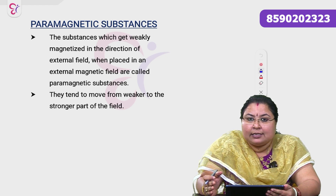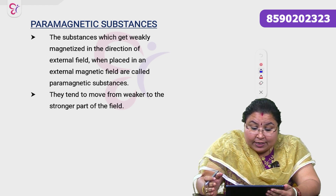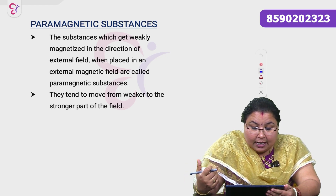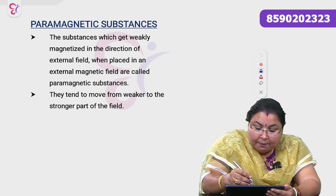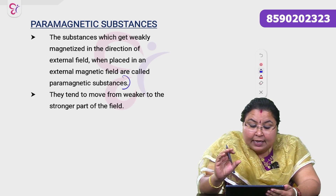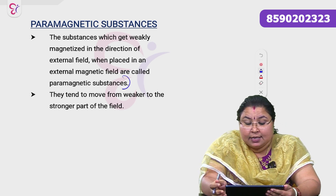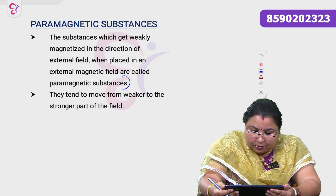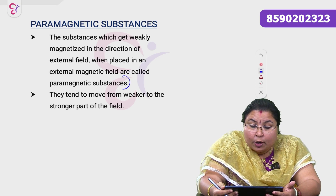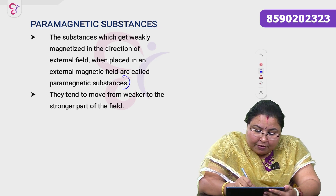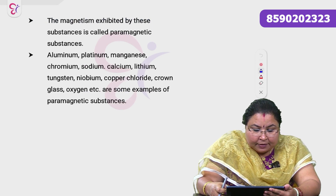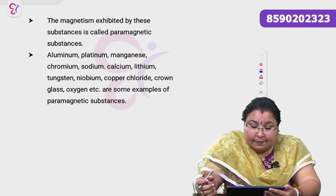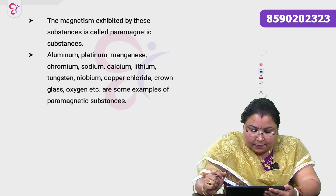Moving on to paramagnetic substances: these are substances which get weakly magnetized in the direction of the external field when placed in an external magnetic field. They are weakly magnetized and tend to move from the weaker to the stronger part of the field. The magnetism exhibited by these substances is called paramagnetism.